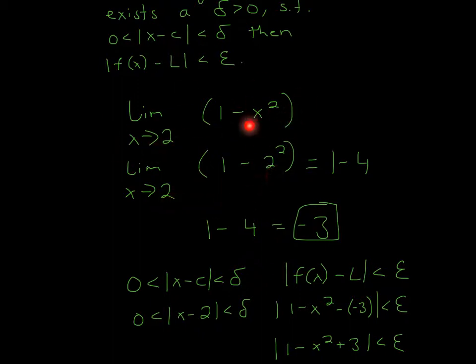If you plug in 2 for x, you'll get 1 minus 4. So 1 minus 4 is negative 3.